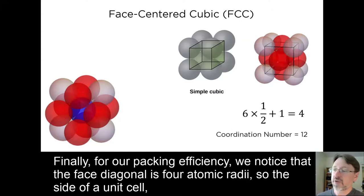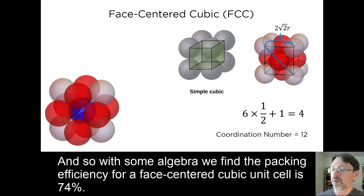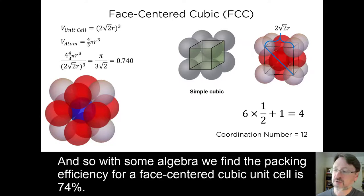Finally, for our packing efficiency, we notice that the face diagonal is four atomic radii. So the side of the unit cell, after applying the Pythagorean theorem, is two times the square root of two r. And so, with some algebra, we find that the packing efficiency for a face-centered cubic unit cell is 74%.